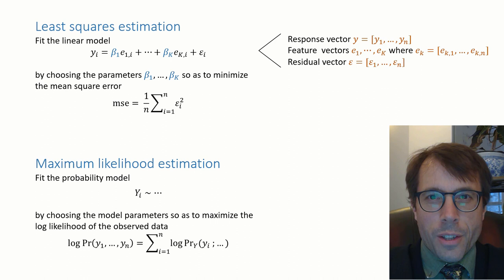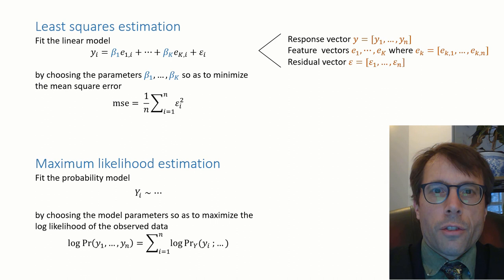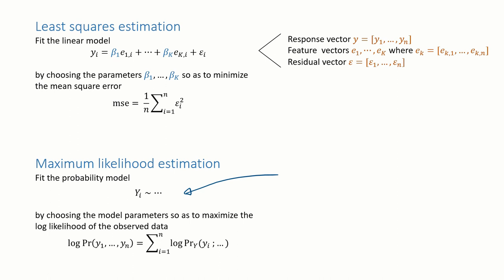I've left dot dot dot because I haven't specified yet what the parameters are. So what probability model would be sensible here? Here's what Gauss said. Let's use the probability model yi is beta1 e1i plus dot dot plus betak eki plus normal of 0 sigma squared. This has parameters beta1 up to betak and also sigma.